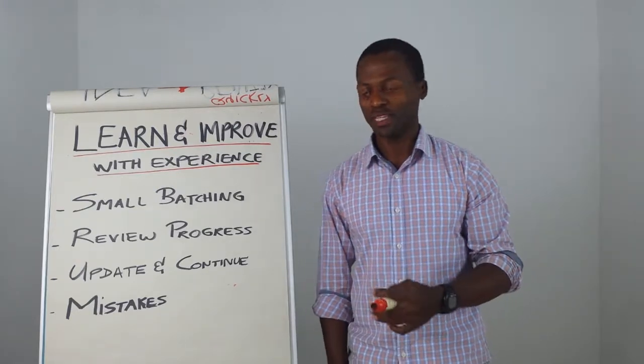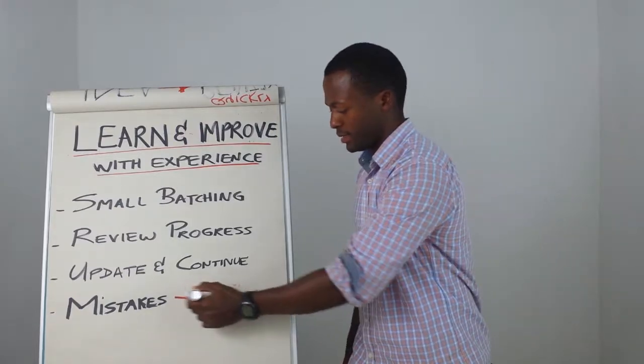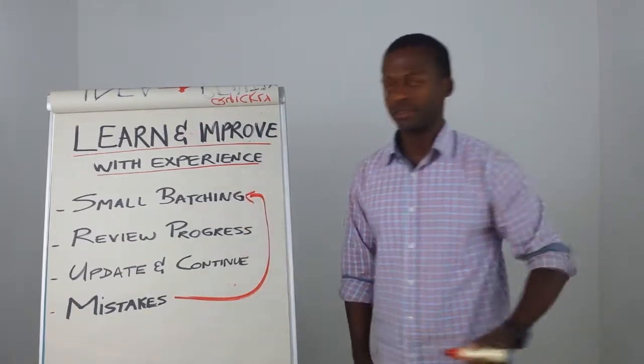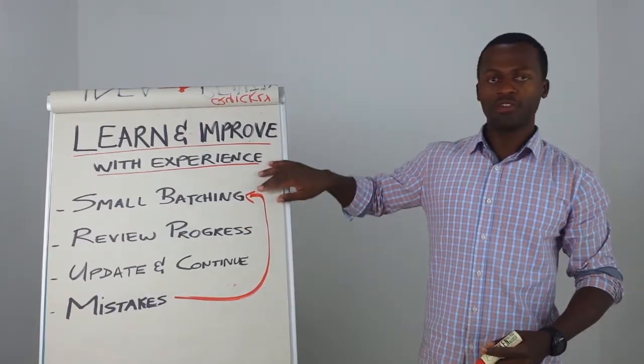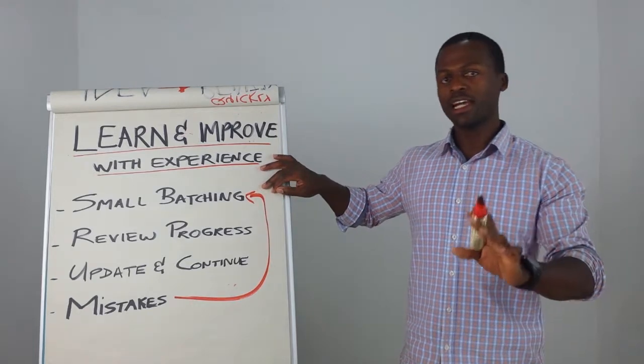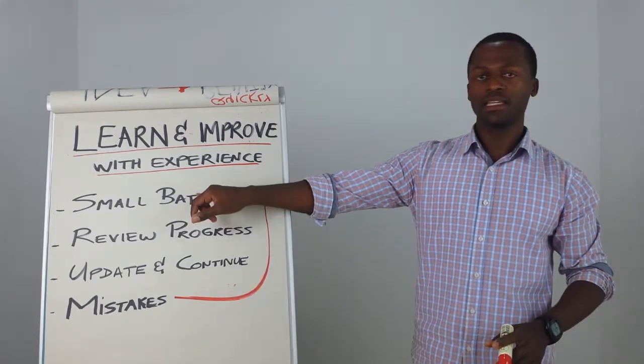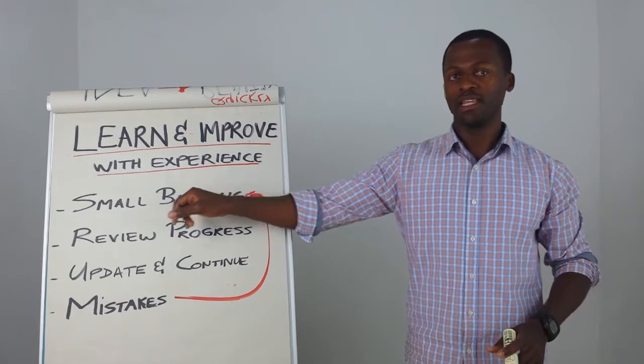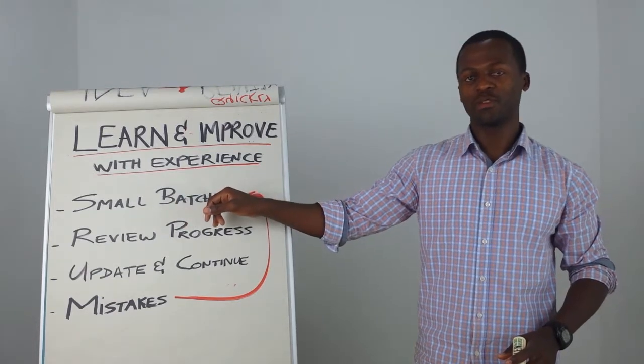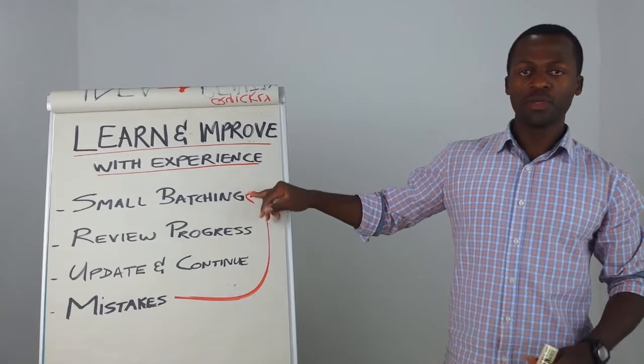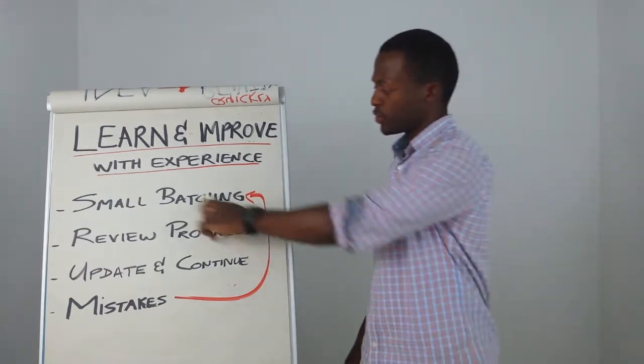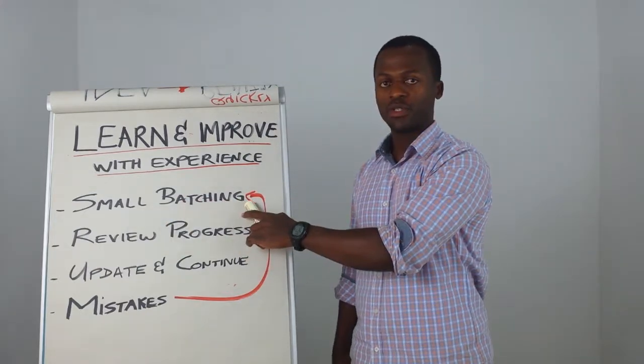This ties in: you are much better off making a mistake in 10 items than making a mistake in 10,000 items that are inside a container ship being shipped from China. This is where small batching really comes in.